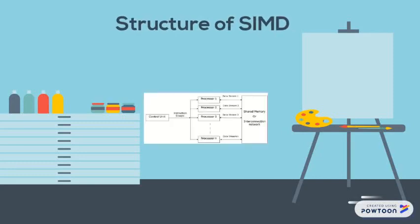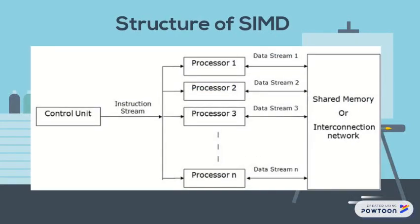This is the structure of SIMD. A single control unit feeds a single instruction stream to multiple processing units. Each PU may have its own dedicated memory, or the memories are shared.